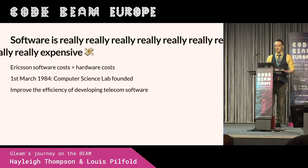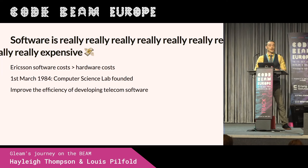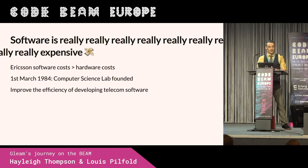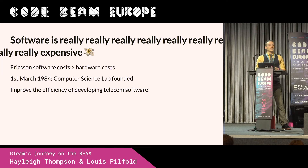Ericsson, being a company mostly known for making hardware, realized that their software costs were exceeding their hardware costs, which seems a little unintuitive. It was quite surprising at the time. And so, in response to that, being a company wanting to make money and care about their costs, they founded the Computer Science Lab. The purpose of this lab at Ericsson was to improve the efficiency of developing software for their telecom systems — making it easier, faster, and cheaper to make software, and also to maintain it.